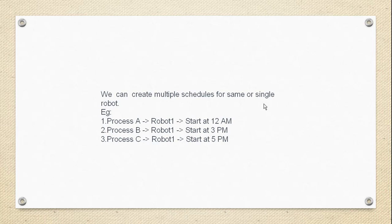One more thing — we can create multiple schedules for the same or a single robot. Think about this: Process A on Robot 1 starts at 12 AM, Process B on Robot 2 starts at 3 AM, and Process 3 on Robot 1 starts at 5 PM. In that case you can run multiple processes on a single robot.